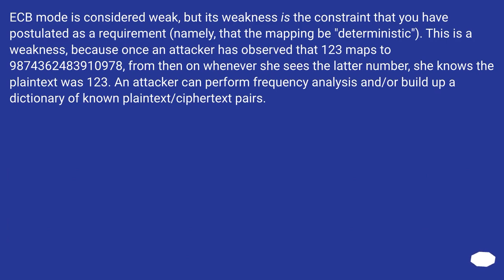ECB mode is considered weak, but its weakness is the constraint that you have postulated as a requirement, namely that the mapping be deterministic. This is a weakness because once an attacker has observed that 123 maps to 9,874,362,483,910,978, from then on whenever she sees the latter number, she knows the plaintext was 123. An attacker can perform frequency analysis and/or build up a dictionary of known plaintext/ciphertext pairs.